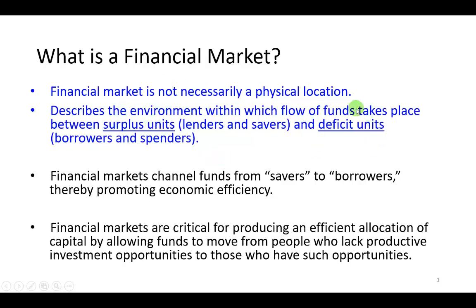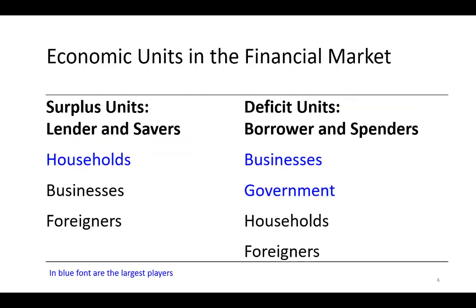We refer to them as surplus units and deficit units. The surplus units are those individuals and organizations that have a little bit more than they need, and as a result, they want to lend them out or invest them. The deficit units are those who have a little less than they need, and as a result, they're going to borrow them or obtain them in the form of equity, primarily for investment purposes and also for public financing in the case of governments.